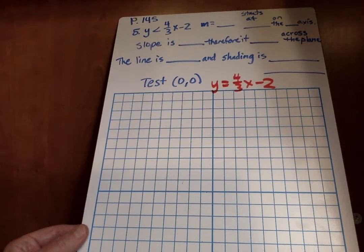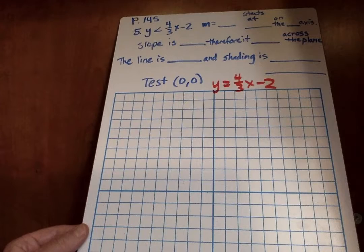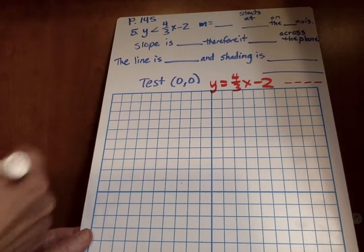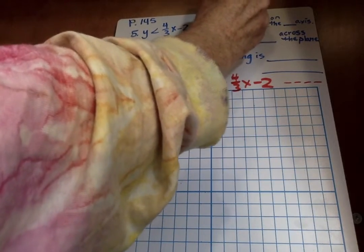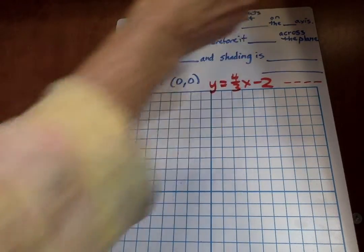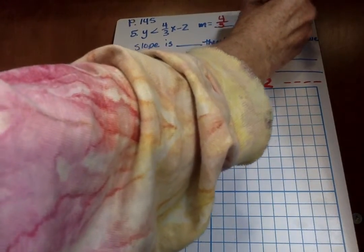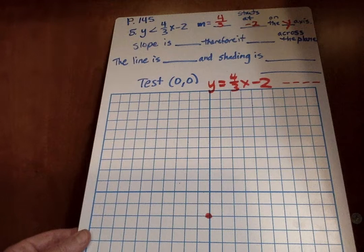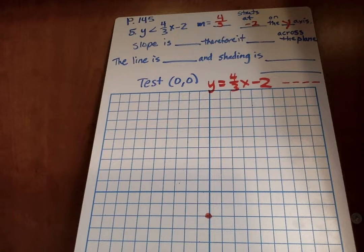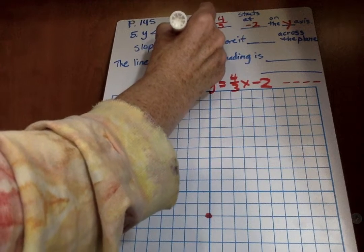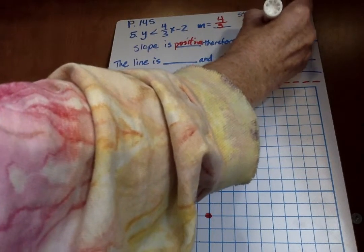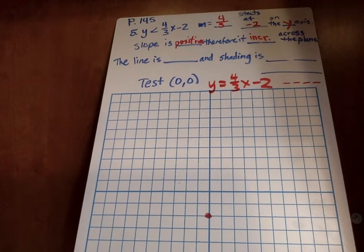So what you want to do is graph Y equals 4 thirds X minus 2. And I'll go over the steps for that. Now we have to first decide if it's a solid or a dotted line. Now over here is less than, and it's taken less ink, so it's going to be a dotted line. And I'll put dotted right there. So it's a dotted line. And we start, so M is our slope and that's 4 thirds. It starts at negative 2 on the Y axis. So negative 2 on the Y axis is right there.